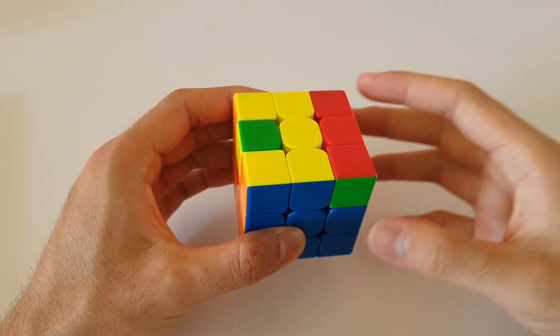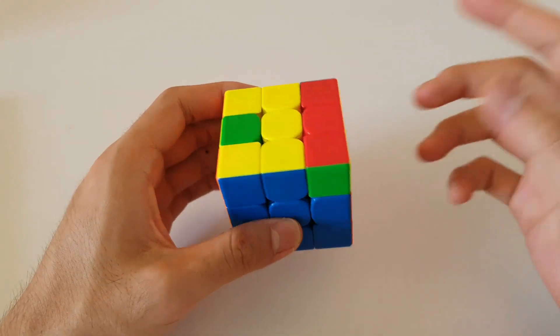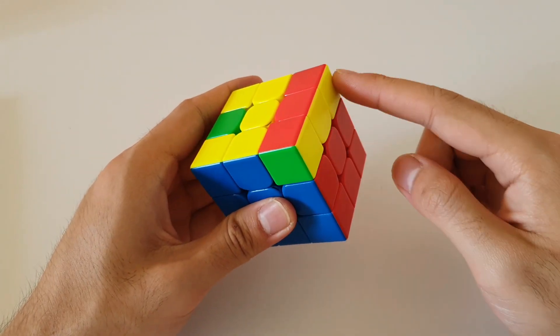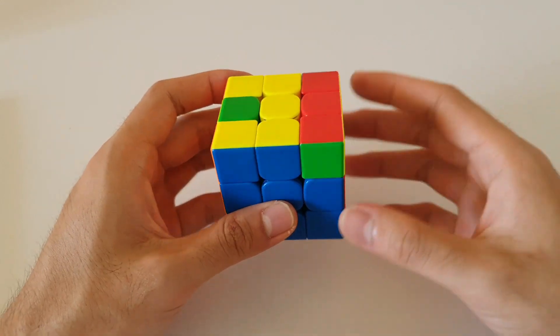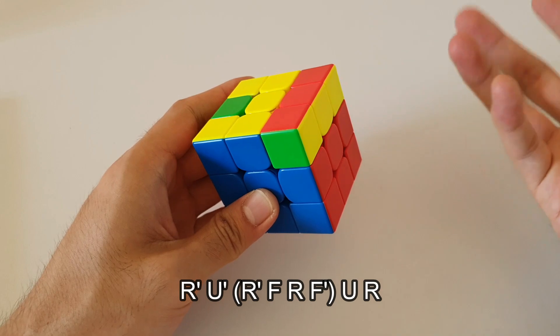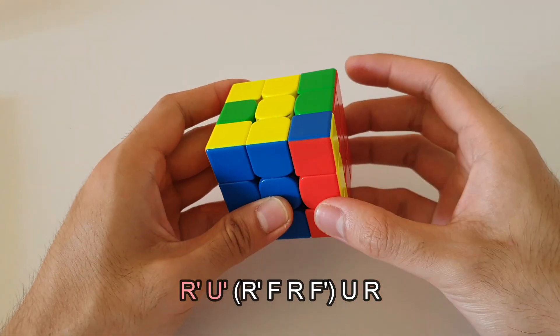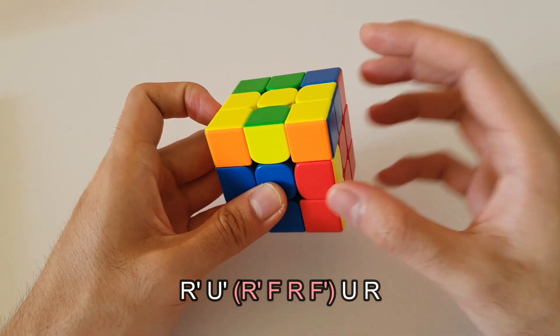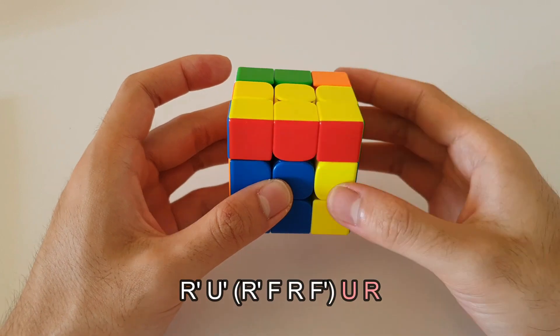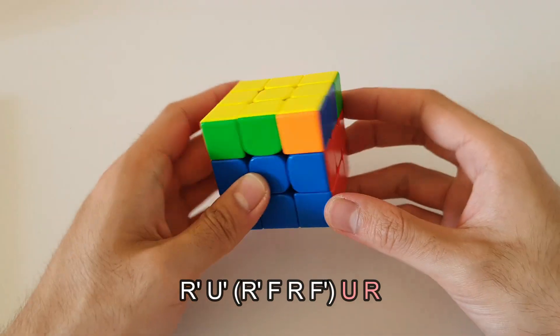So next up, moving on to the C shapes. Once again there are two different cases. This one here is the first case where we have the C on the top layer and the 3x1 bar on the right. And so this is how we want to hold this case. The algorithm is actually quite short and easy to remember. It starts off with an R' followed by a U'. After that you do a sledgehammer on the right side. And then you undo the setup moves with a U followed by an R. And that solves that OLL case.